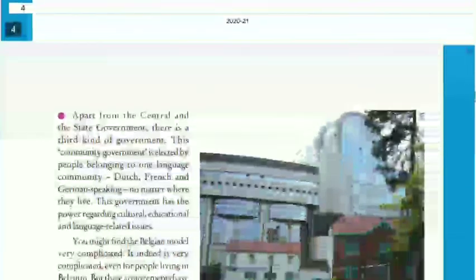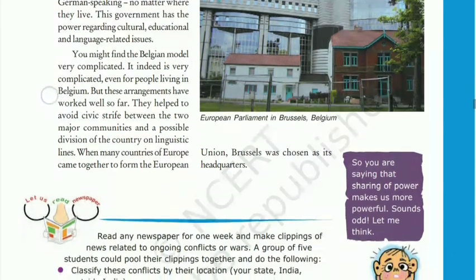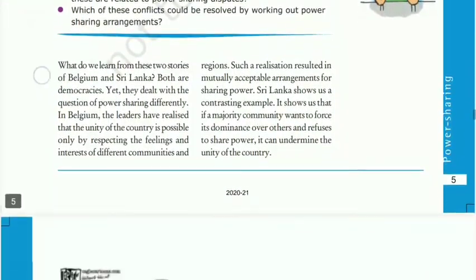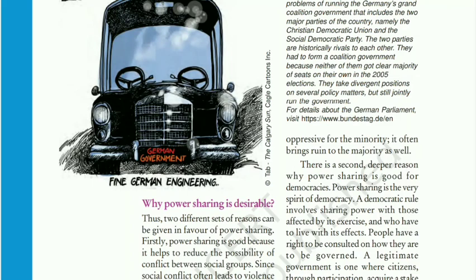Apart from the central and state governments, there was a third type called the community government, elected by the linguistic groups of society. It handled cultural, educational, and language-related issues and helped resolve conflicts. In this part we studied the resolutions made by Sri Lanka and Belgium, but only Belgium succeeded in its approach. In the next part we will study why power sharing is desirable. Till then, goodbye and thank you — don't forget to subscribe to the channel.